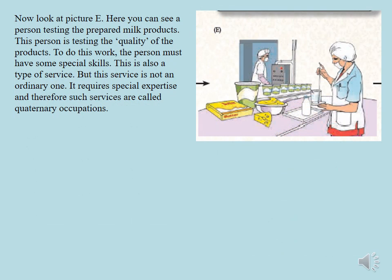Now look at picture E. Here you can see a person testing the prepared milk products — this person is testing the quality of the products. To do this work, the person must have some special skills. This is also a type of service, but not an ordinary one. It requires special expertise, and therefore such services are called quaternary occupations.